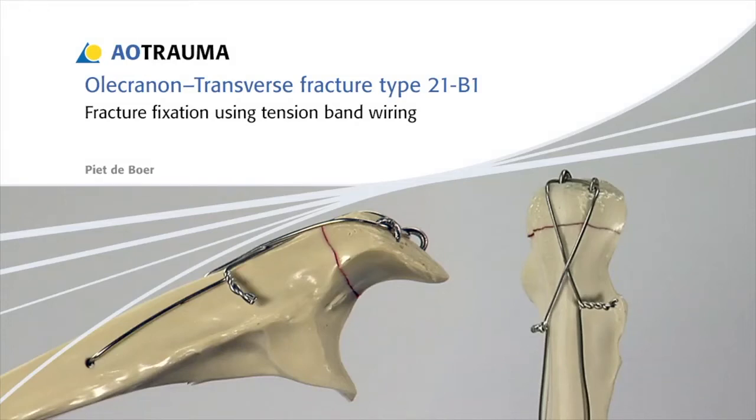Tension band wiring of a transverse olecranon fracture, Miller AO classification 21B1.